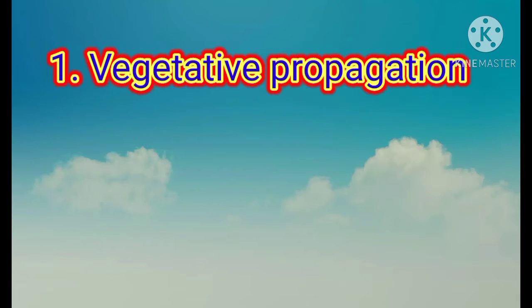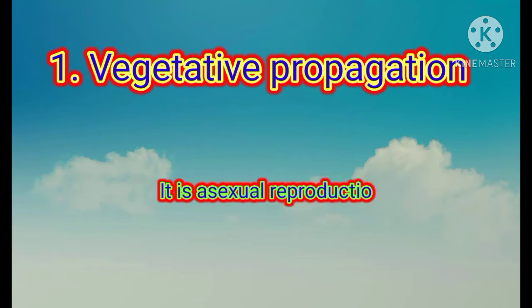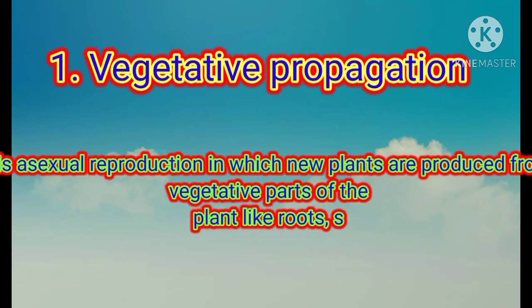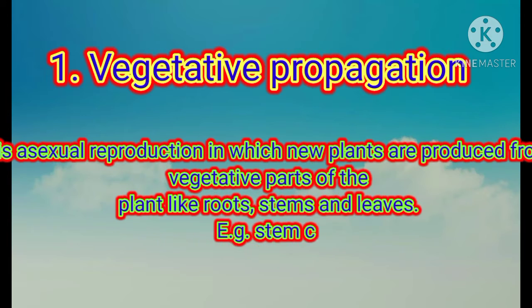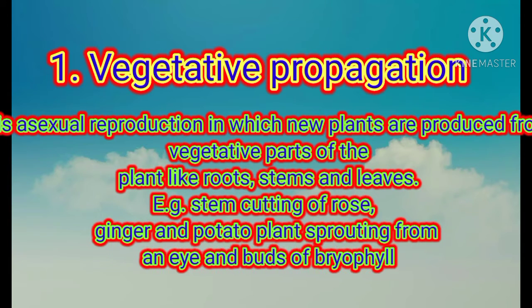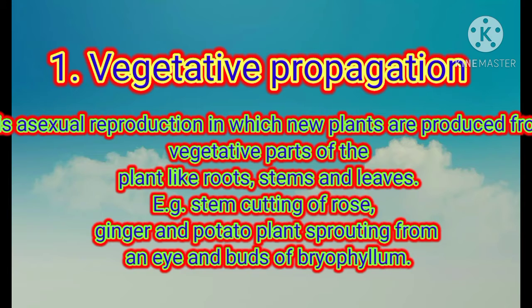The first type of asexual reproduction is vegetative propagation. It is asexual reproduction in which new plants are produced from the vegetative parts of the plant like roots, stem, and leaves. For example, stem cutting of rose, ginger, and potato plants sprouting from an eye, and buds of bryophyllum.